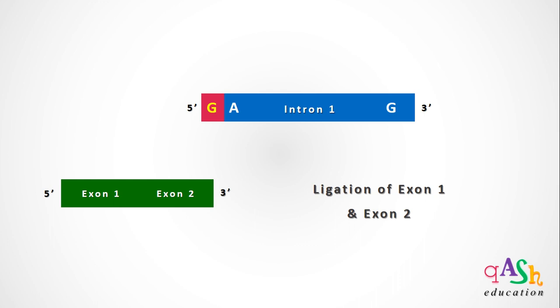After this process, exon 1 and exon 2 are ligated. The ligation of both exons is catalyzed by the self-splicing ribozyme activity.